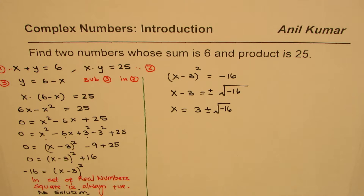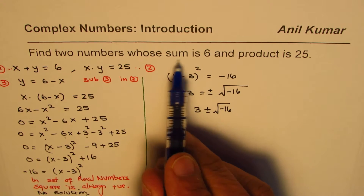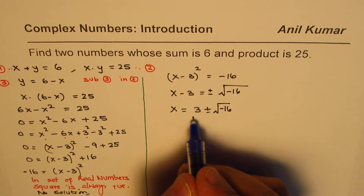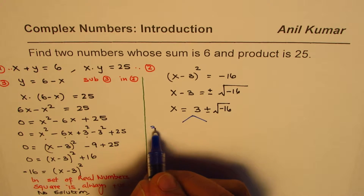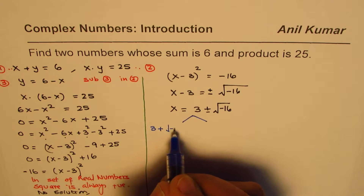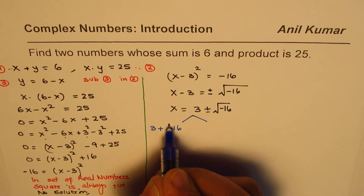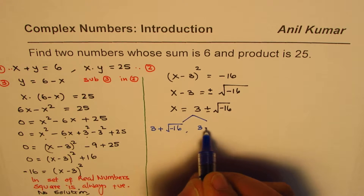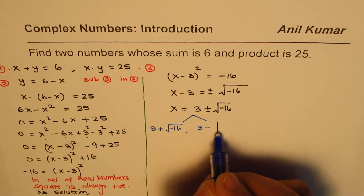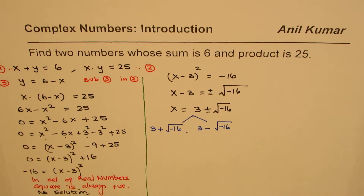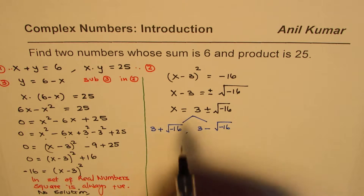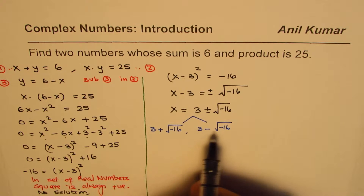So the solution to our original question — sum is 6 and product is 25 — gives us two numbers: one is 3 plus the square root of minus 16, and the other is 3 minus the square root of minus 16.